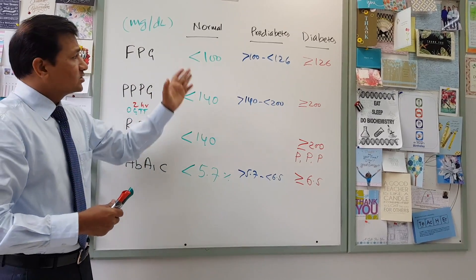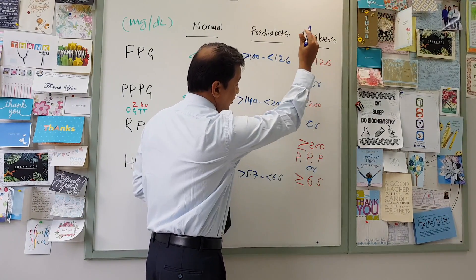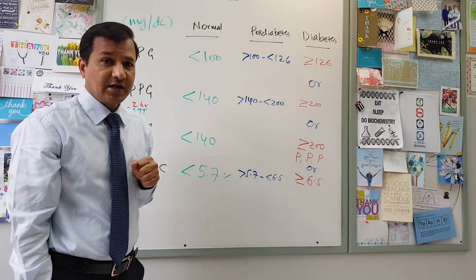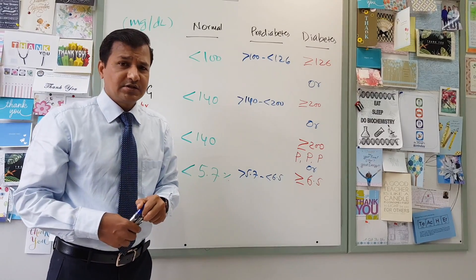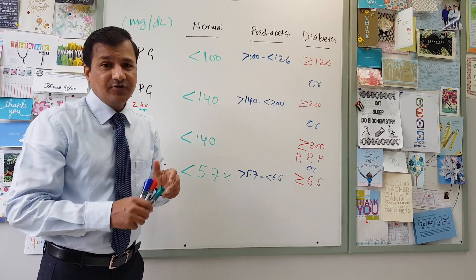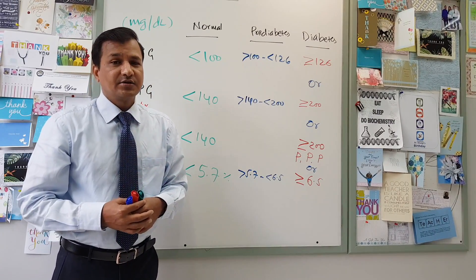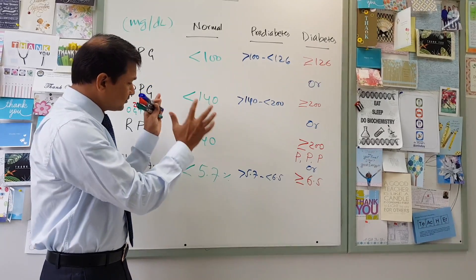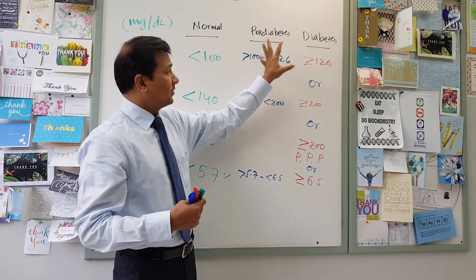So we have four parameters. Any one of them being positive is a criterion for diagnosing diabetes mellitus — not all of them together, just any one. Fasting plasma glucose ≥126, postprandial plasma glucose ≥200, random plasma glucose ≥200 with polyuria/polyphagia/polydipsia, or glycated hemoglobin ≥6.5% — each individually gives the diagnosis of diabetes mellitus. These numbers are all from the American Diabetes Association and differentiate normal from pre-diabetes and diabetes.